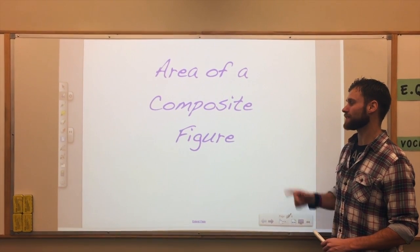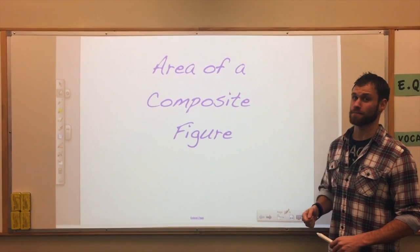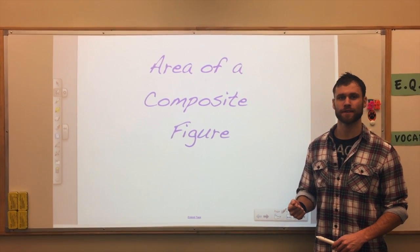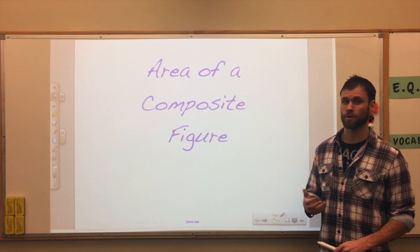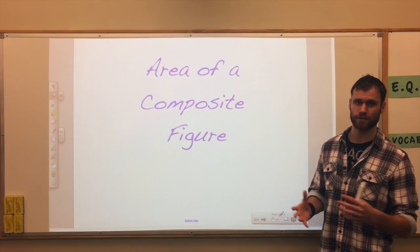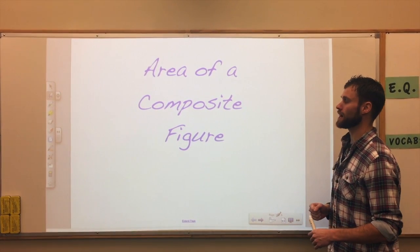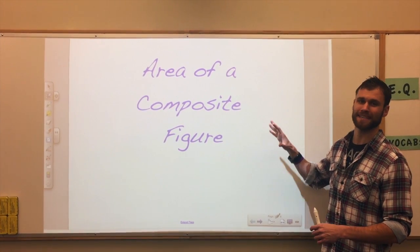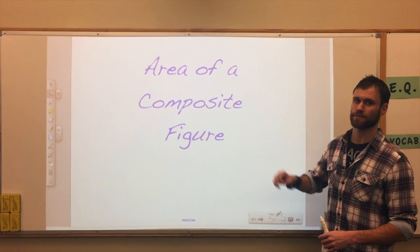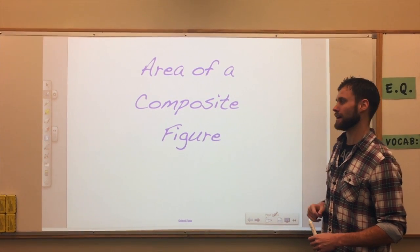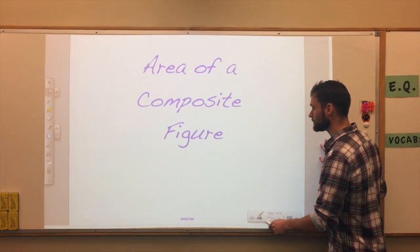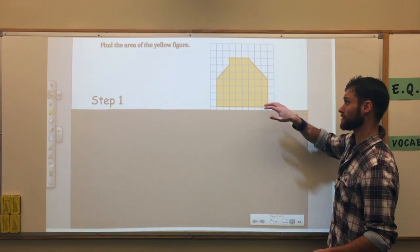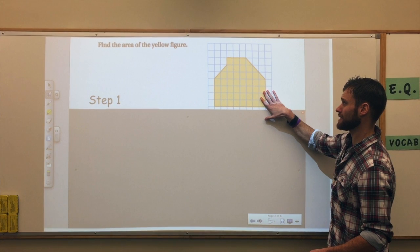For today's lesson we're finding the area of composite figures. A composite figure is a figure made up of more than one different shape — different shapes kind of put together. We're finding the area, which means all of the space inside the two-dimensional figure. Our first example says find the area of the yellow figure. You can tell this is definitely a composite figure.